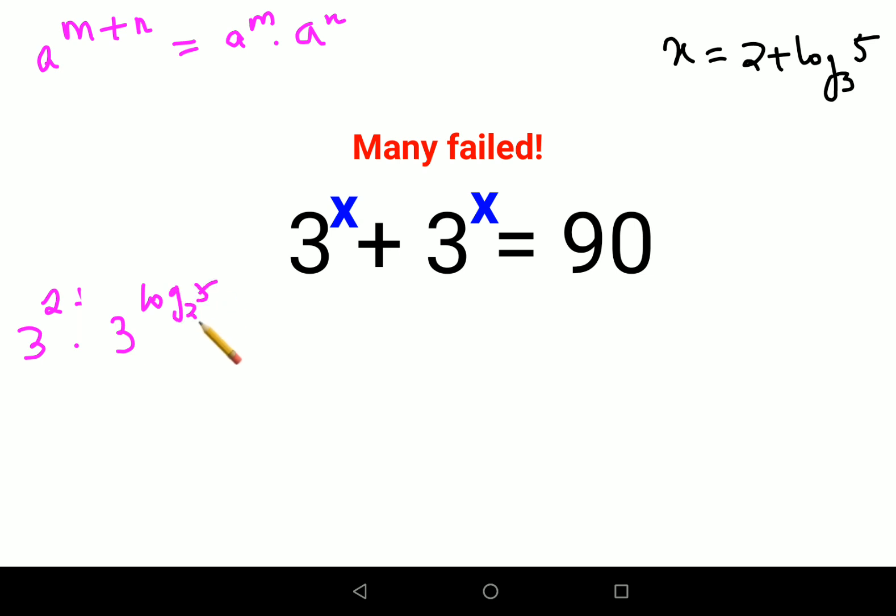Similarly for this particular 3^x. So 3^2 × 3^(log5 base 3). Next, 3^2 is nothing but 9, and here also I have 9.